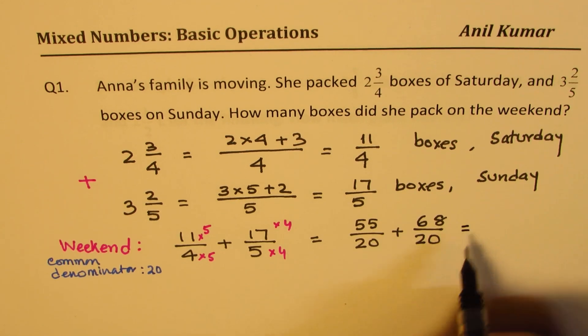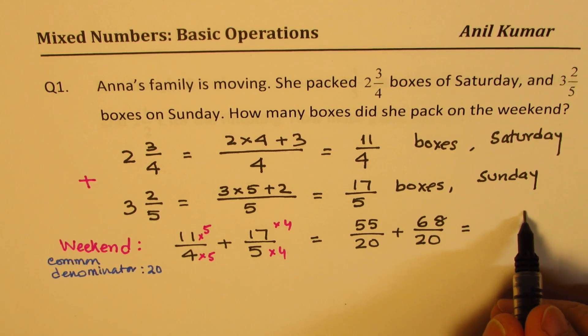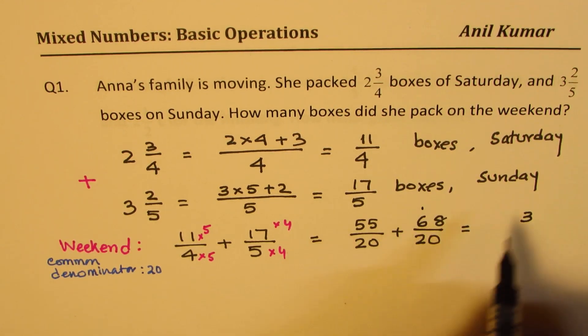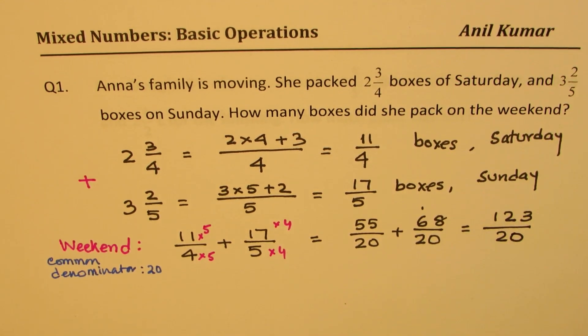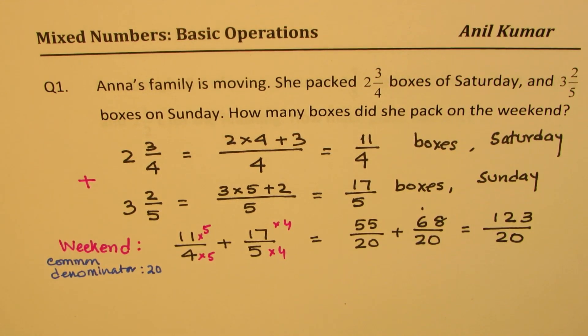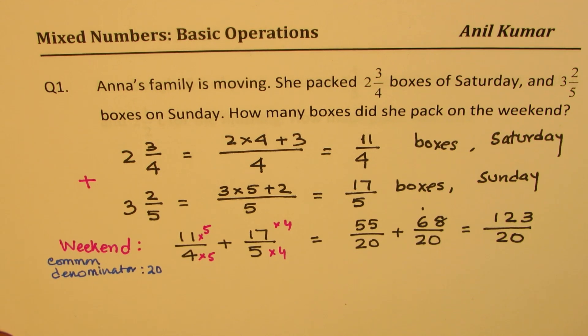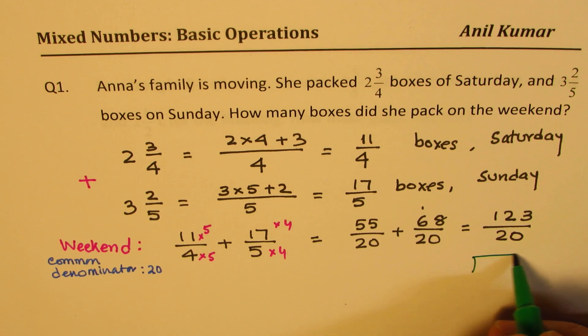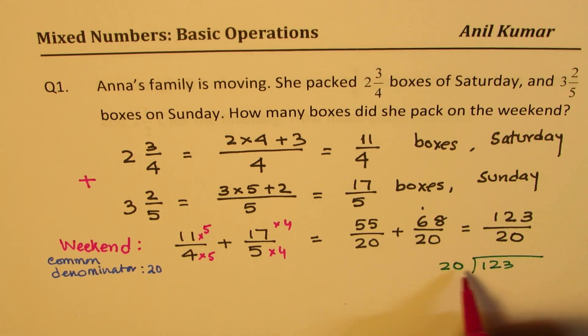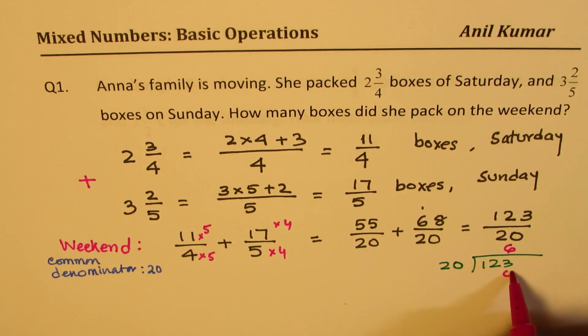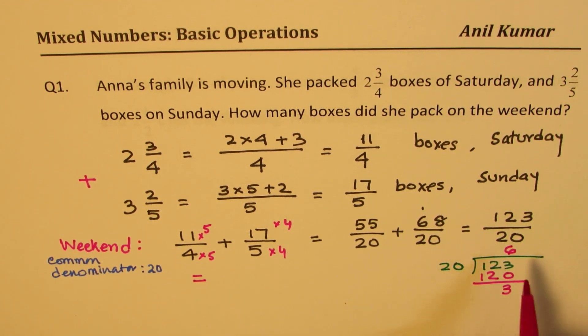So we do get the common denominator. Once you get the common denominator, you can add the numerators. So 8 and 5 is 13, and 7 and 5 is 12. So 123 divided by 20. So you get your result, which is an improper fraction. Now, you have to write back the answer as a mixed number. So we have to divide 123 by 20. It goes 6 times. 6 times 20 is 120, and what you get here is 3.